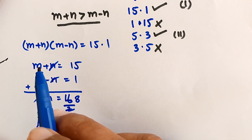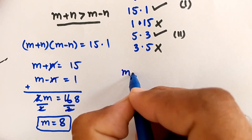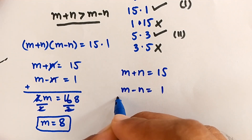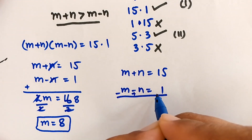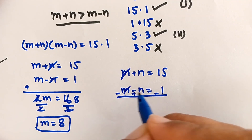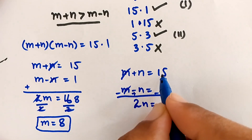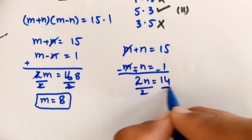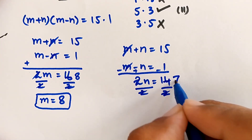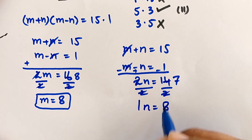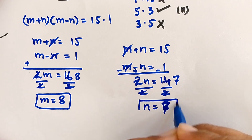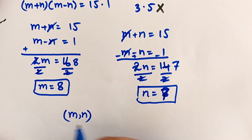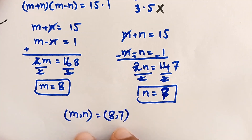To find n, we subtract equation 2 from equation 1: m plus n equals 15 minus m minus n equals 1. The m terms cancel, giving n plus n equals 2n, which equals 15 minus 1 equals 14. Dividing both sides by 2, n equals 7. So from case one, m equals 8 and n equals 7.